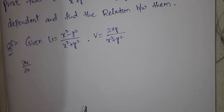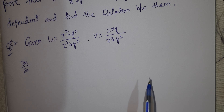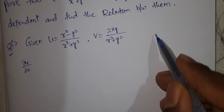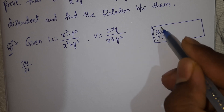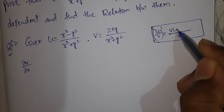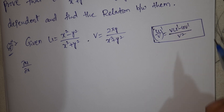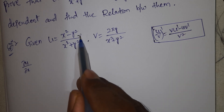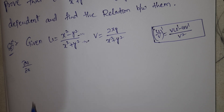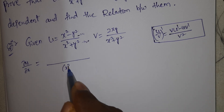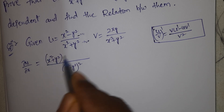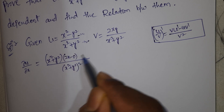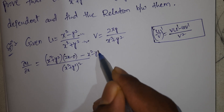We compute ∂u/∂x. Using the quotient rule (u/v)' = (v·u' - u·v') / v², the denominator is x² + y² whole square. The numerator gives: (x² + y²)·2x minus (x² - y²)·2x, which expands to 2x³ + 2xy² - 2x³ + 2xy².